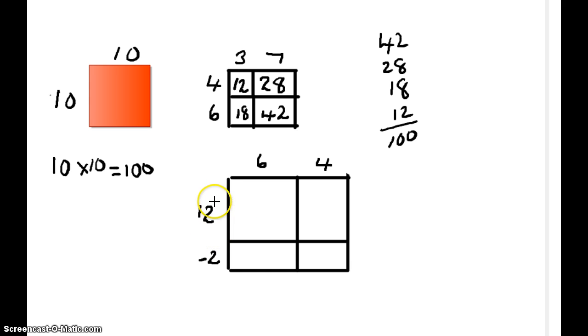Let's try this again with our 10 by 10, but instead of writing 10 by 10, we're going to write 12 minus 2, which is indeed 10, and then 6 plus 4. 12 times 6 is 72, 12 times 4 is 48, negative 2 times 6 is negative 12, and negative 2 times 4 is negative 8. And we can add these up very easily.